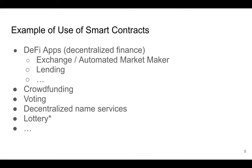You can have exchanges to swap currencies like euros for dollars, lending to automatically lend money to people, crowdfunding for projects, voting — which will be your homework — decentralized name services where instead of a central authority deciding that google.com belongs to Google, the blockchain manages that. You can also do lotteries, though there are some additional requirements for that.